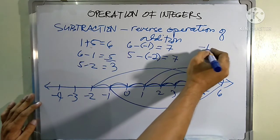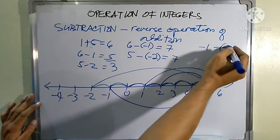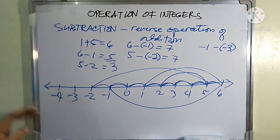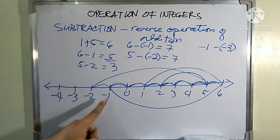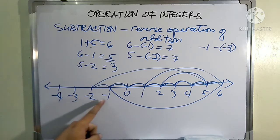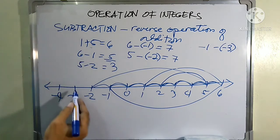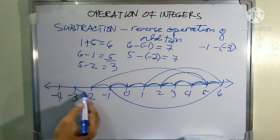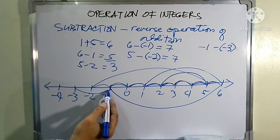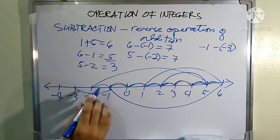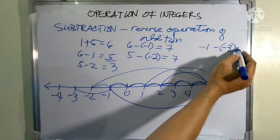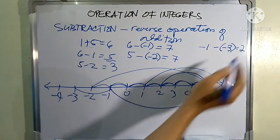Another example: negative one minus negative three. What number must be added to negative three in order to get negative one? There are two units to the right, therefore our answer is positive two.